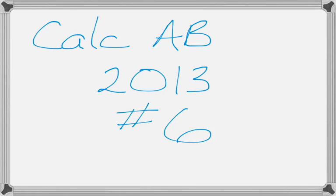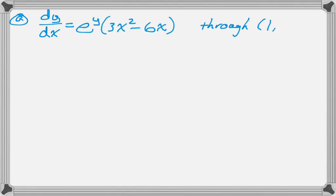This is number 6 from the 2013 Calc-AB exam, and it is a separable differential equation problem. The first thing we're told is dy/dx is e to the y times the quantity 3x squared minus 6x.